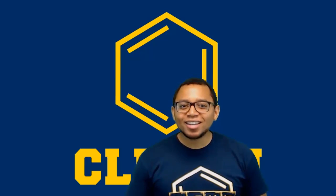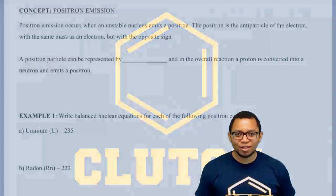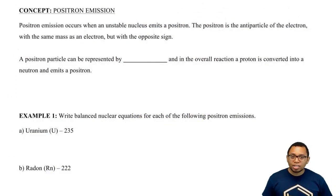Hey guys! In this new video, we're going to take a look at positron emission. Positron emission occurs when an unstable nucleus emits a positron.